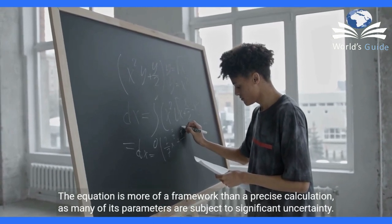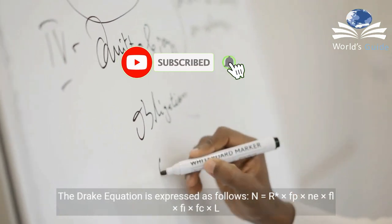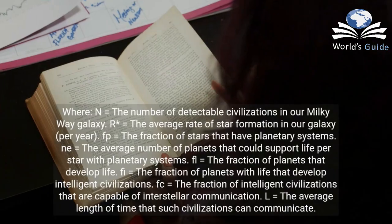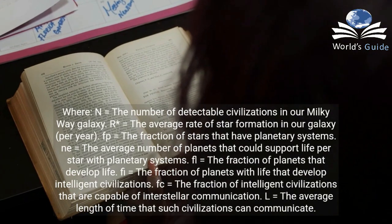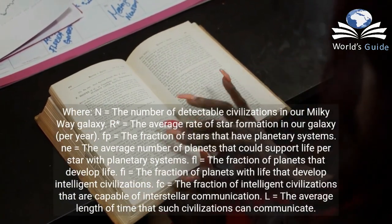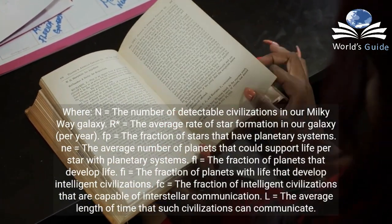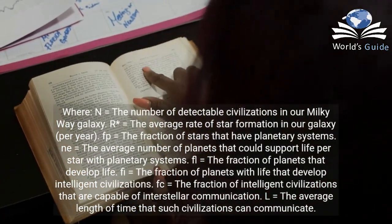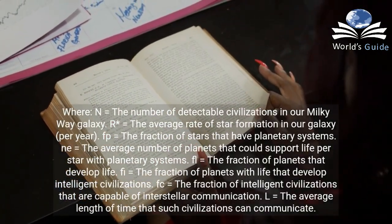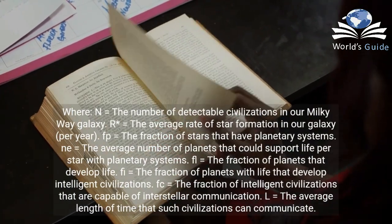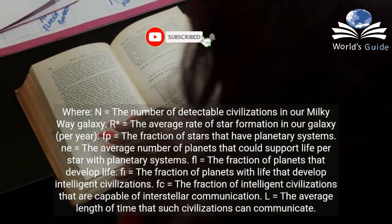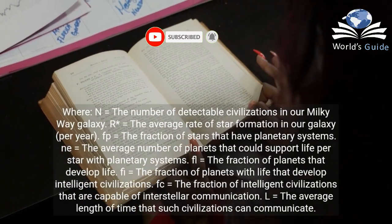The Drake Equation is expressed as follows: N = R* × fp × ne × fl × fi × fc × L, where N equals the number of detectable civilizations in our Milky Way galaxy; R* equals the average rate of star formation in our galaxy per year; fp equals the fraction of stars that have planetary systems; ne equals the average number of planets that could support life per star with planetary systems; fl equals the fraction of planets that develop life; fi equals the fraction of planets with life that develop intelligent civilizations; and fc equals the fraction of intelligent civilizations capable of interstellar communication.